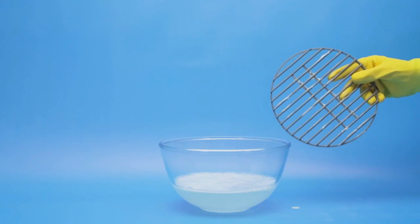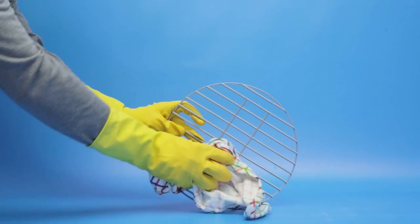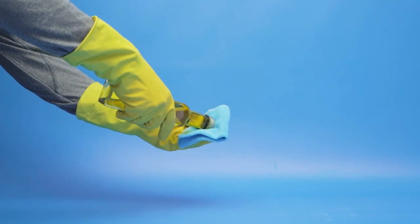Dry your grills with a tea towel straight away. You can add some vegetable oil to a cloth and wipe over to avoid rusting.